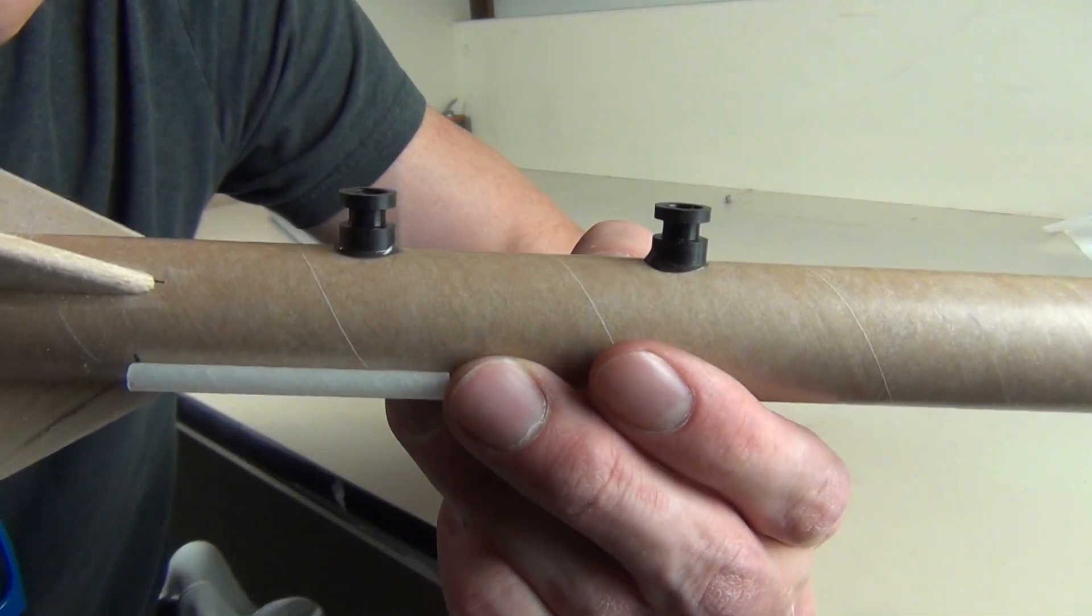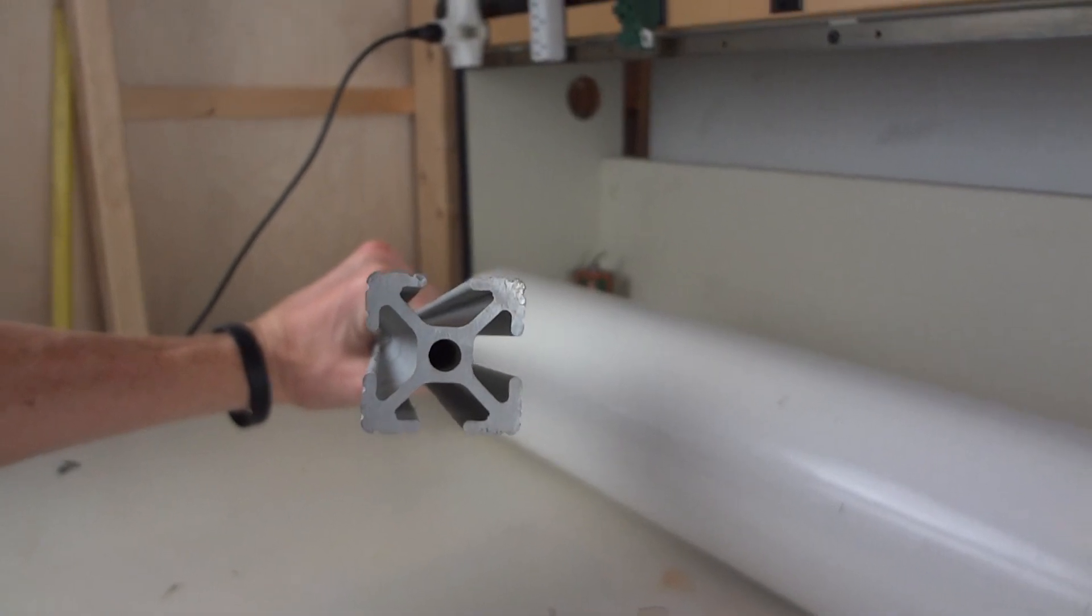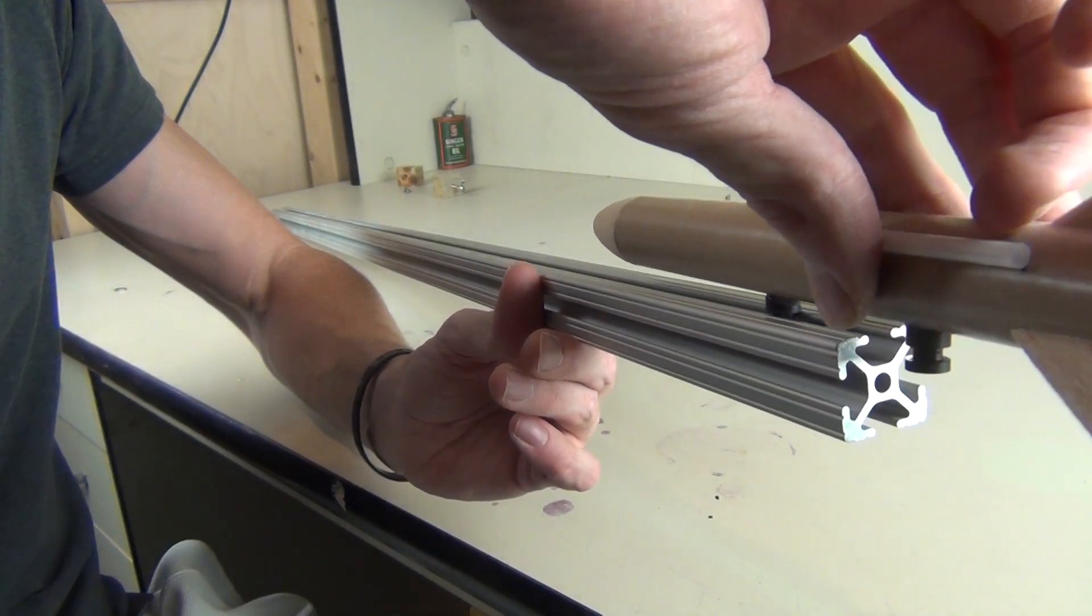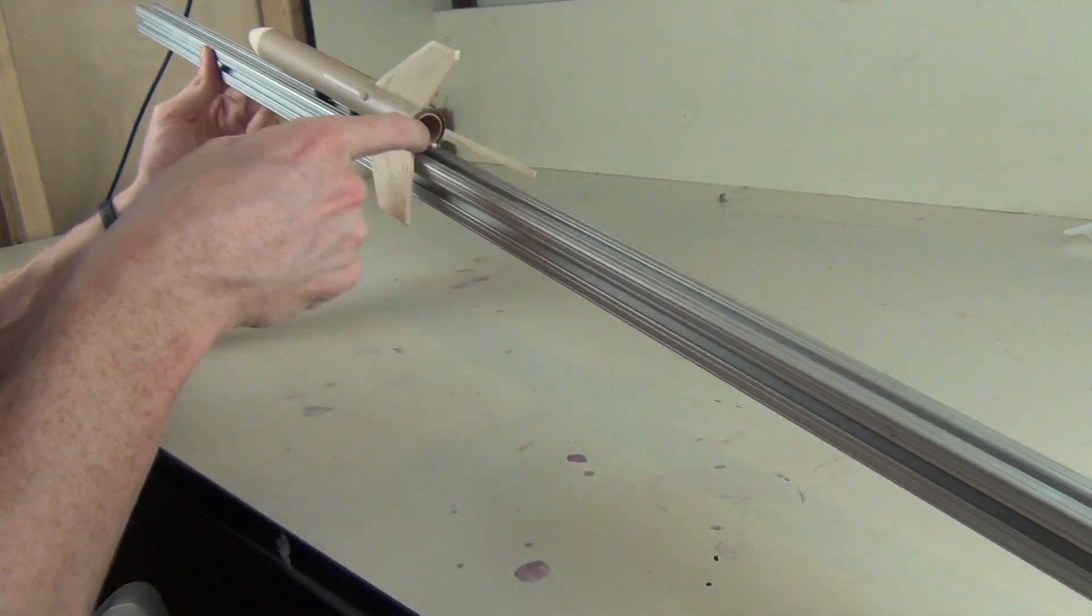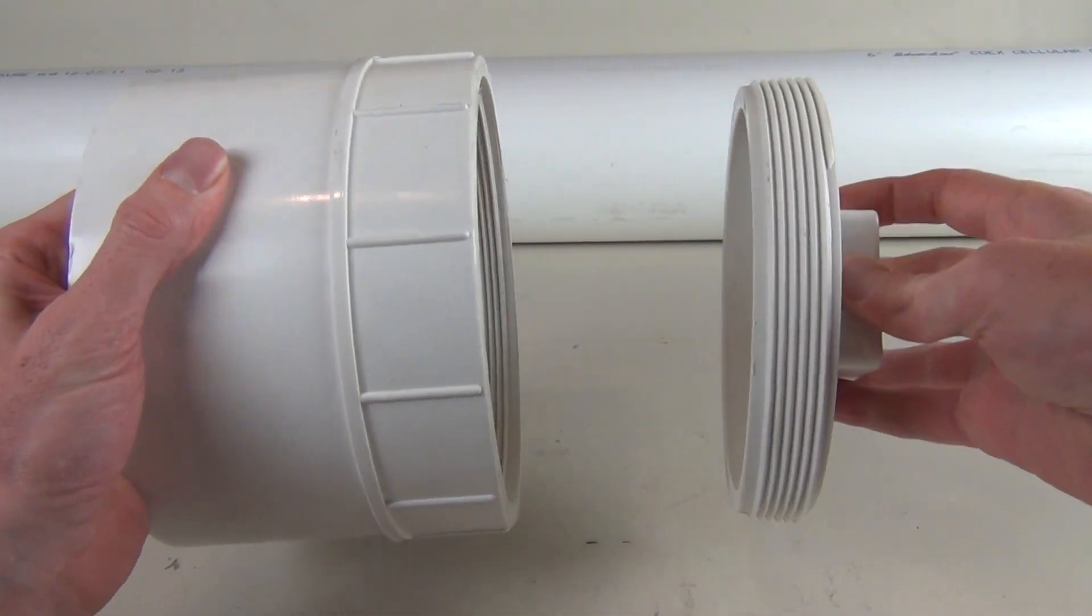I then mounted some rail buttons to some Estes Rockets. The rail buttons slide in the slots in the extruded aluminum. I then solvent welded a clean out to the piece of PVC pipe.